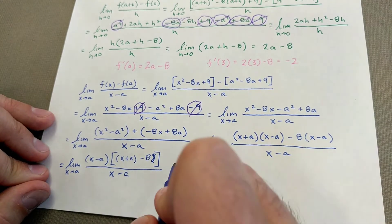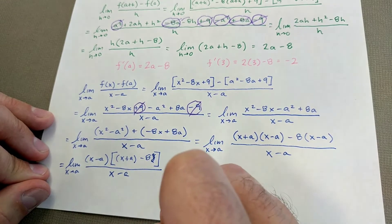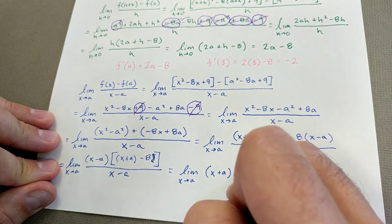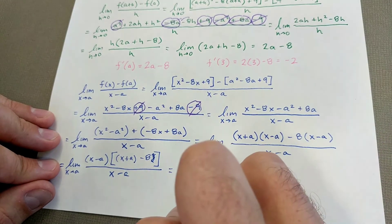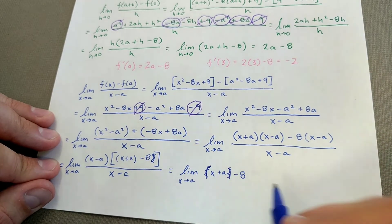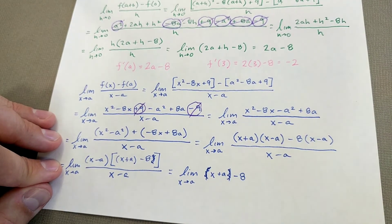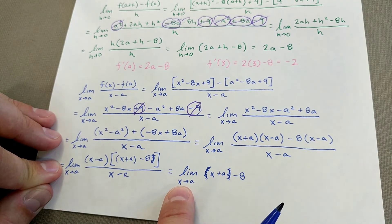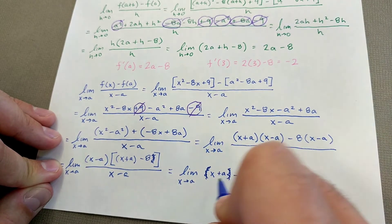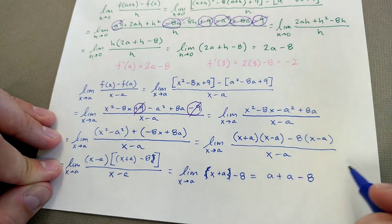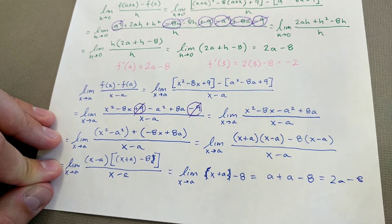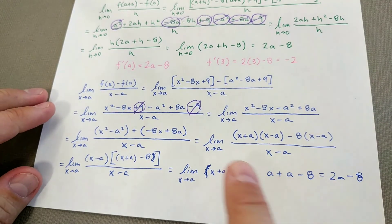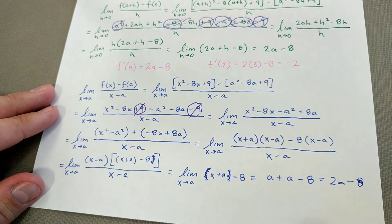So what does this leave me with? The limit as X approaches A of X plus A minus 8. Now let's evaluate the limit because it's not a problem. I don't have zero in the denominator anymore. So I'm going to make X be A. So we're going to get A plus A minus 8, which of course is 2A minus 8. And that is the same formula that we got up here. So F prime of A is still 2A minus 8. That's good. If different formulas got me different answers, I would wonder what I did wrong.